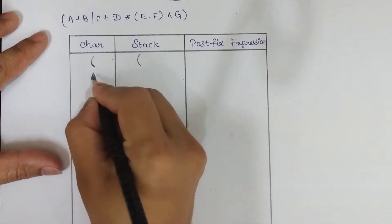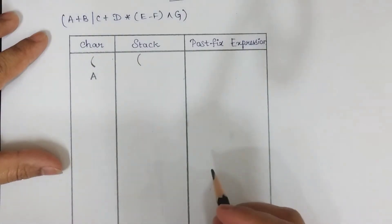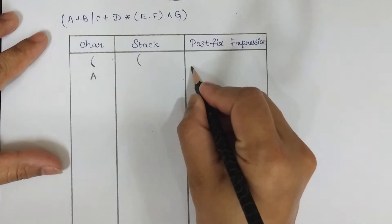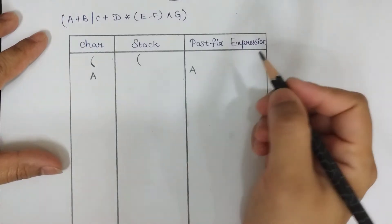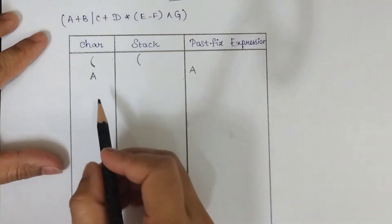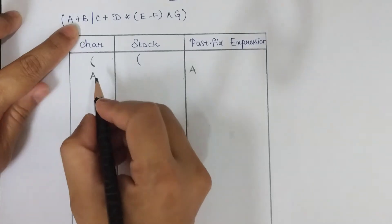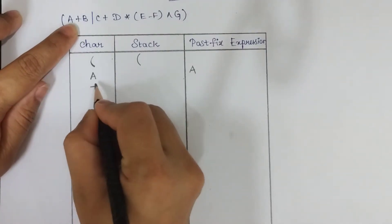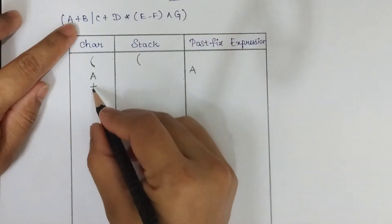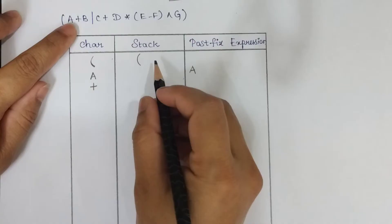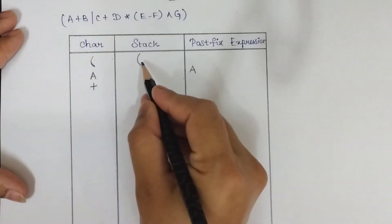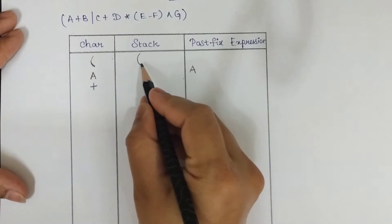The second character is 'A', which is an operand — when we scan an operand it should be appended to the postfix expression. The next operator is arithmetic operator plus, which should also be inserted — pushed — into the stack.